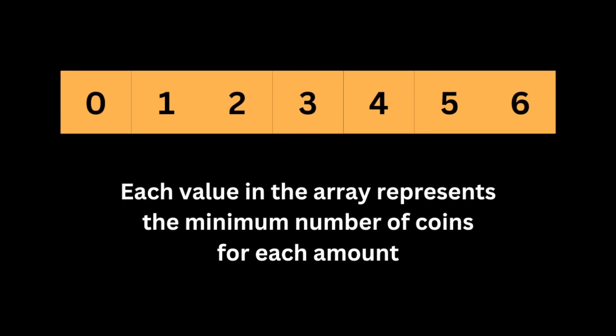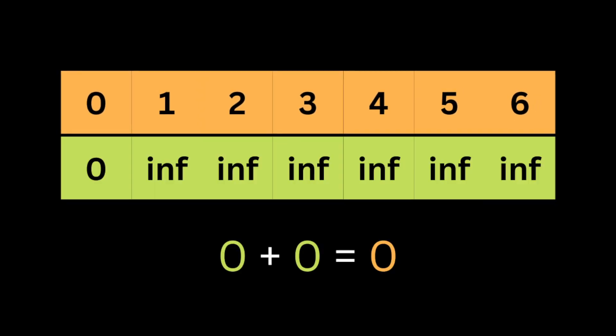For the dynamic programming approach, we're going to create an array that will hold the minimum number of coins for each amount starting from zero up to the amount, which in this case is six. Since we're dealing with minimums, values are often initialized to infinity. We know that to reach amount zero the number of coins needed is always zero, so we set index zero to zero and all other amounts to infinity.